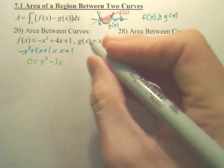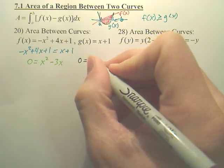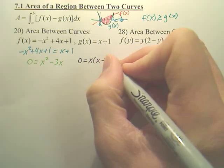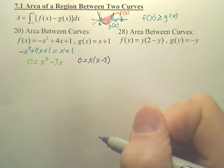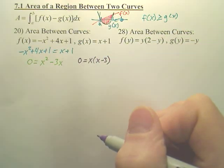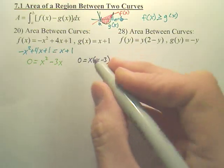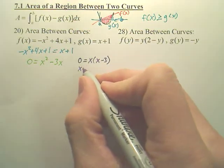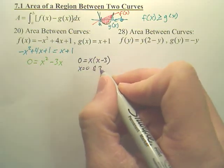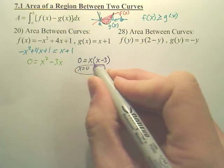To solve that, that looks like it's going to be 0 equals x times x minus 3. Pull the GCF out. You set each piece equal to 0.